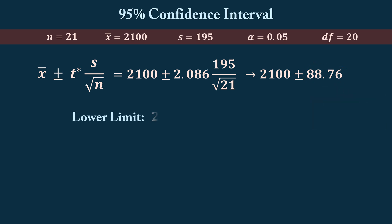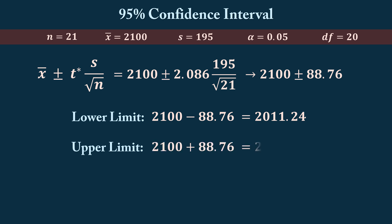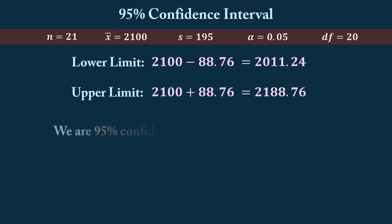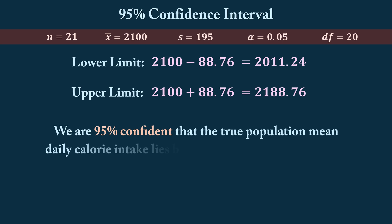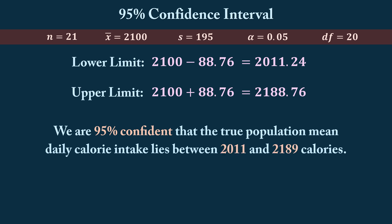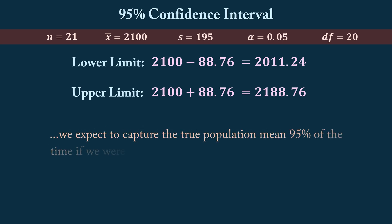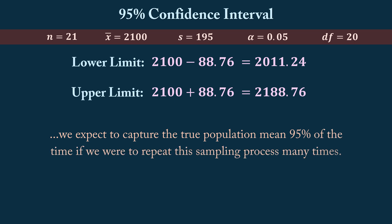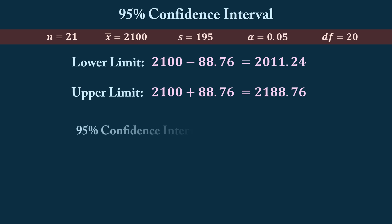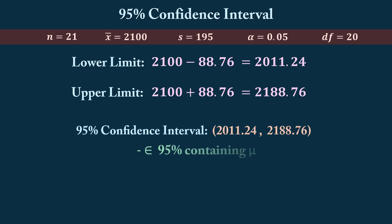The lower limit of the confidence interval is the sample mean minus the margin of error, giving us 2,011.24. The upper limit is the sample mean plus the margin of error, resulting in 2,188.76. We are 95% confident that the true population mean daily calorie intake lies between 2,011 and 2,189 calories. Using this method, we expect to capture the true population mean 95% of the time if we repeat this sampling process many times. It's important to note that this specific interval may be one of the 95% that contains the true population mean, or it could be one of the 5% that does not.